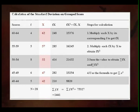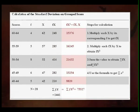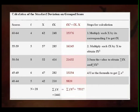After getting the midpoints (x), the fourth column gives fx, obtained by multiplying x by its corresponding frequency. For example, 62 times 4 is 248, and 57 times 5 is 285. The fifth column gives fx-squared, obtained by multiplying fx by x: 248 times 62 equals 15376, and 285 times 57 equals 16245.